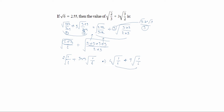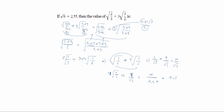We add the two terms: 2 plus 9 equals 11, giving 11 root of 1 by 6. We can write this as 11 by root 6, which equals 2 by root 6 plus 9 by root 6 equals 11 by root 6. Since root 6 is 2.55, we get 11 divided by 2.55, which is approximately 4.3. So the value of root 2 by 3 plus 3 root 3 by 2 is equal to 4.3.